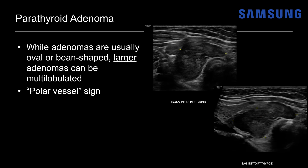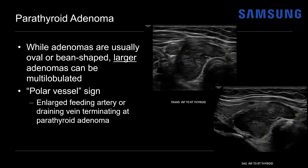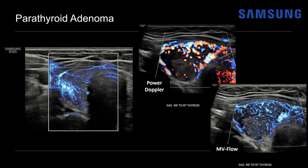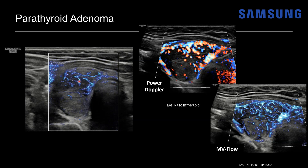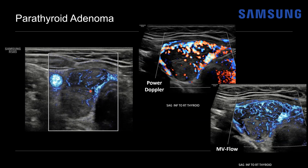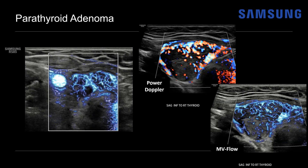Another finding that can be seen is the polar vessel sign — often described on CT but can also be seen on ultrasound. That's the presence of an enlarged feeding artery or draining vein terminating at the parathyroid adenoma. Returning to those flow images, we can see the flow throughout the large parathyroid adenoma is somewhat coalescent at the margins, which may represent a polar vessel sign. On this real-time image, here's the normal thyroid compared to the hypervascular parathyroid adenoma — you can see just how hypervascular that adenoma is. Quite impressive and typical for these larger adenomas.